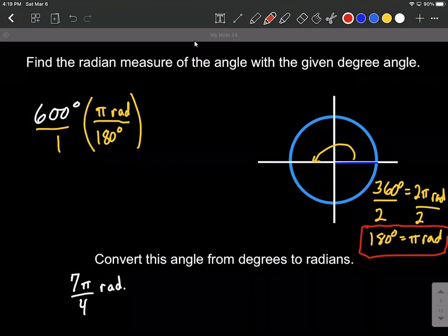At this point, we can cancel out our degrees. And what's going to end up happening is we have two fractions multiplied together. So we can multiply our numerators. So 600 times pi, and then we also have radians as our units.